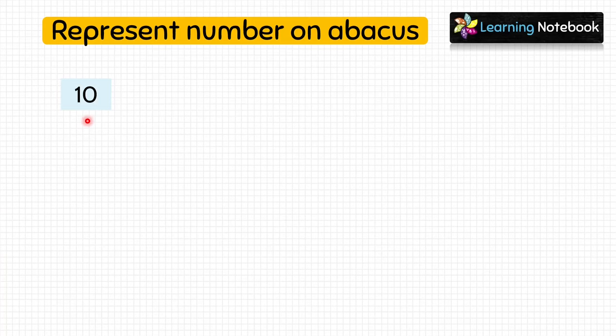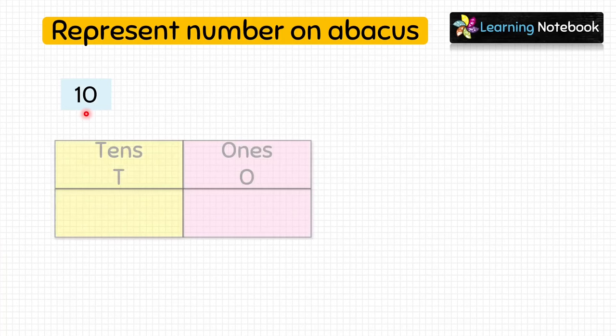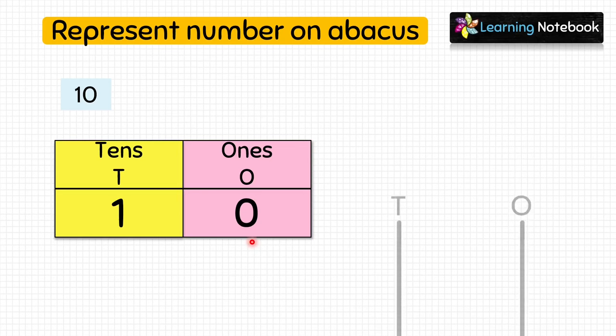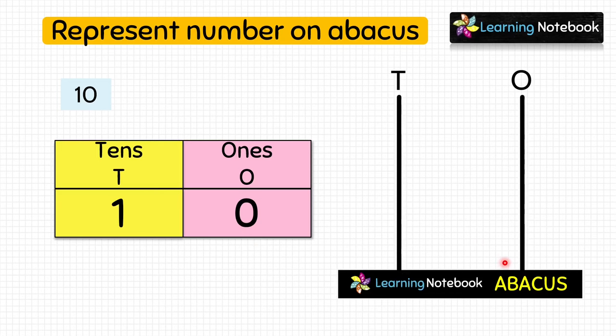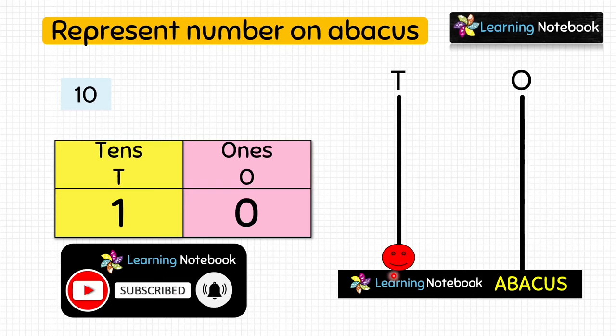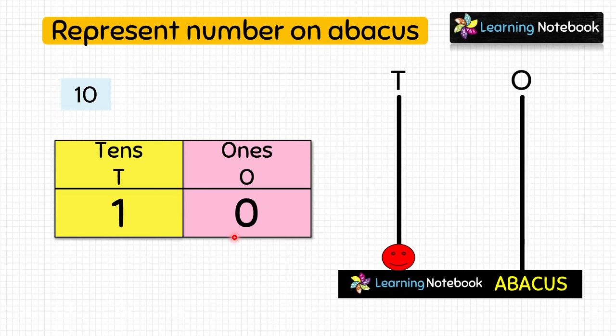Now let's represent the last number: 10. Here we have 0 at the ones place and 1 at the tens place. Students, how many beads are we going to put at the ones place? Yes — 0 beads, because we have 0 at the ones place. So we will not put any bead at the ones place. We will put only 1 bead at the tens place. In this way we have represented the number 10 on the abacus.